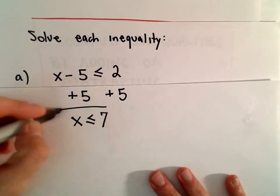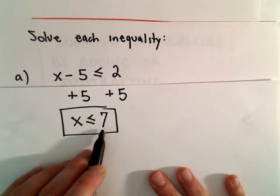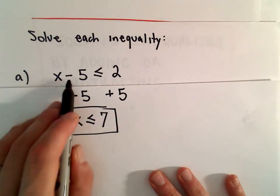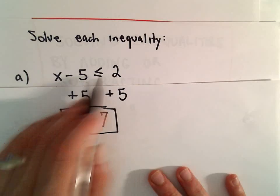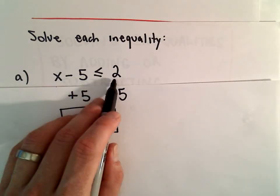And now we have our solution. It says if we take any number that's less than or equal to 7 and we subtract 5 from that number, we'll get a number that's less than or equal to 2.